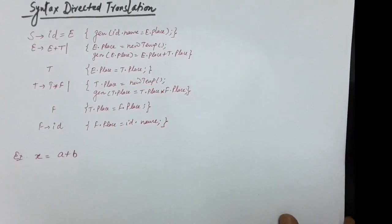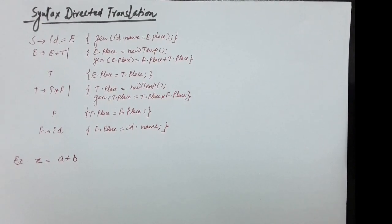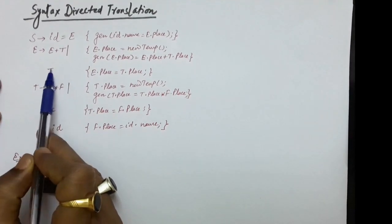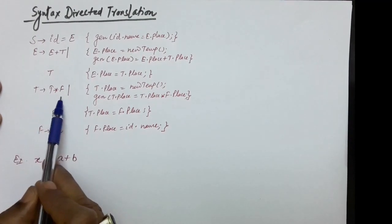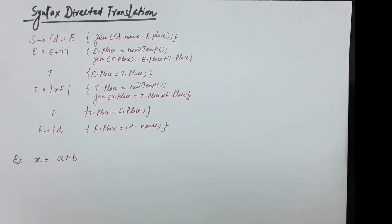Hello everyone. In this lecture we will be discussing some more examples on syntax directed translation schemes. Here we are taking an example of generating three address codes. Given this grammar: S produces id equals e, E produces E plus T, T produces T star F, and F produces id. The syntax directed translation scheme rules for semantic analysis are written alongside every production rule.